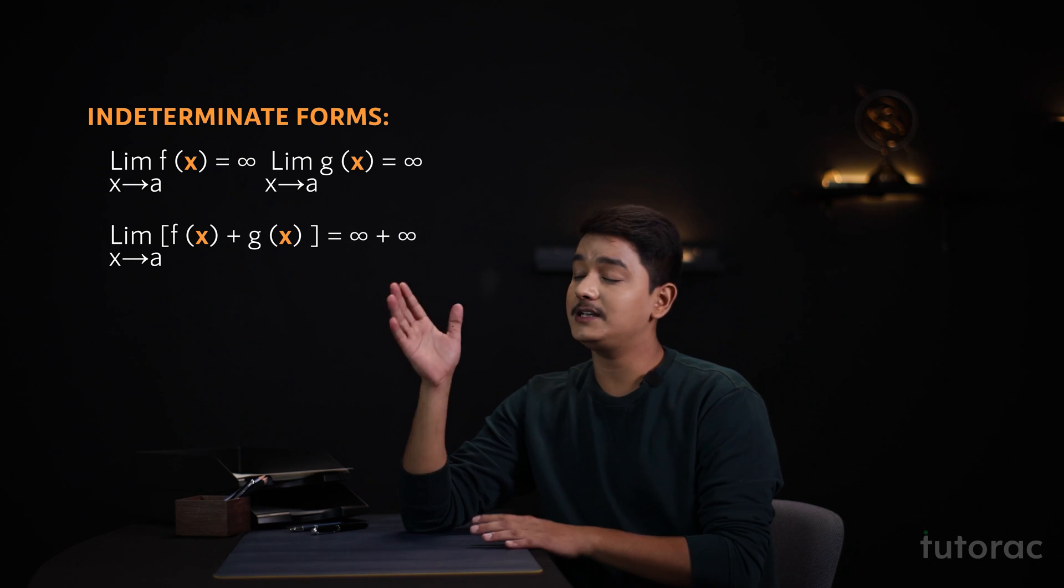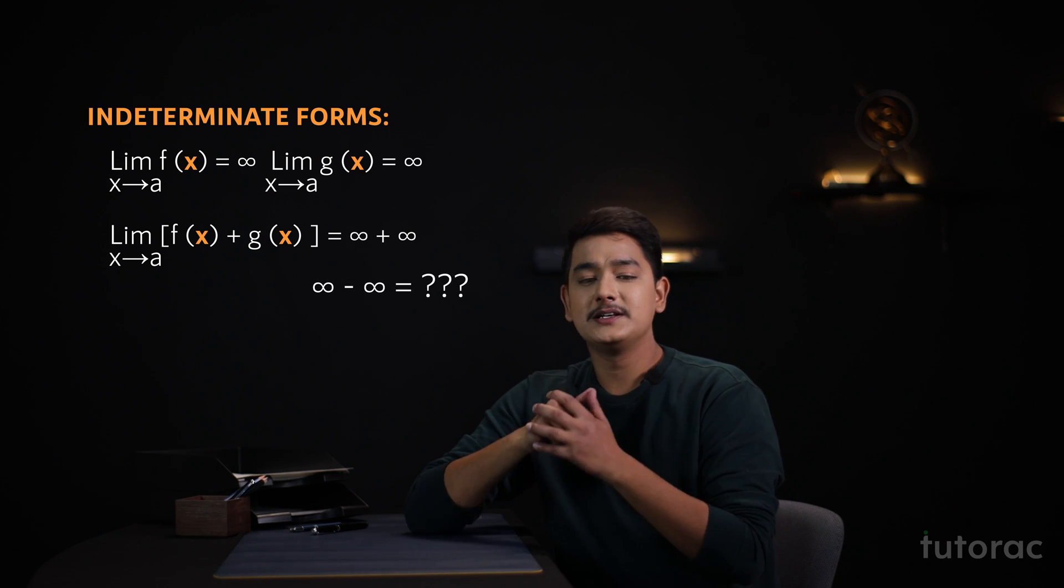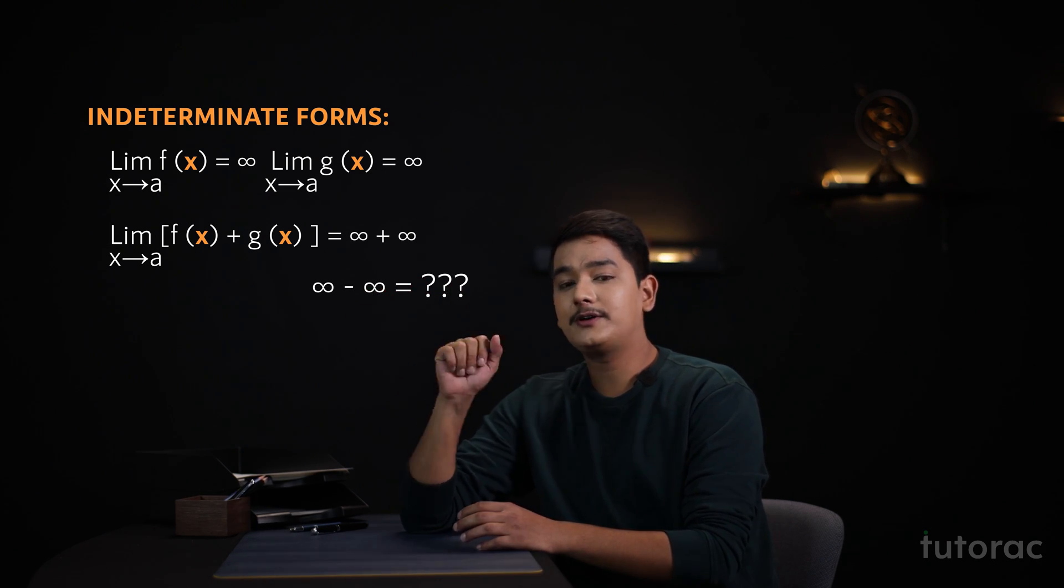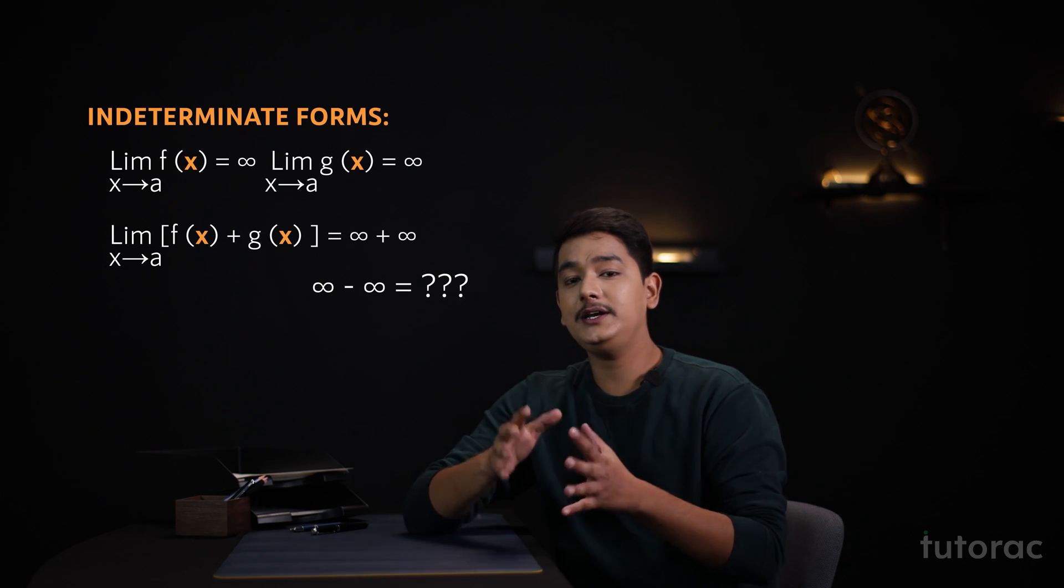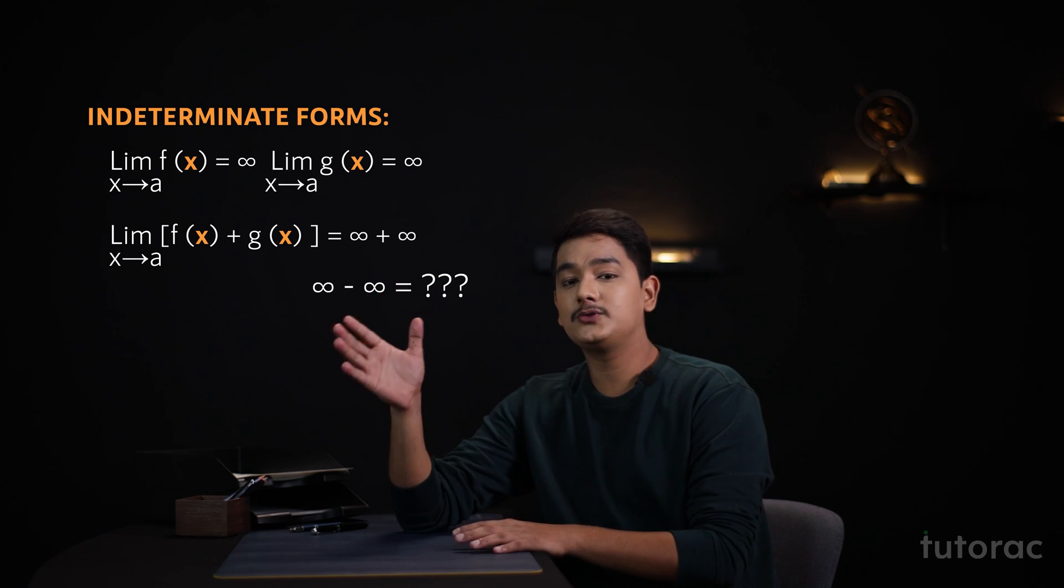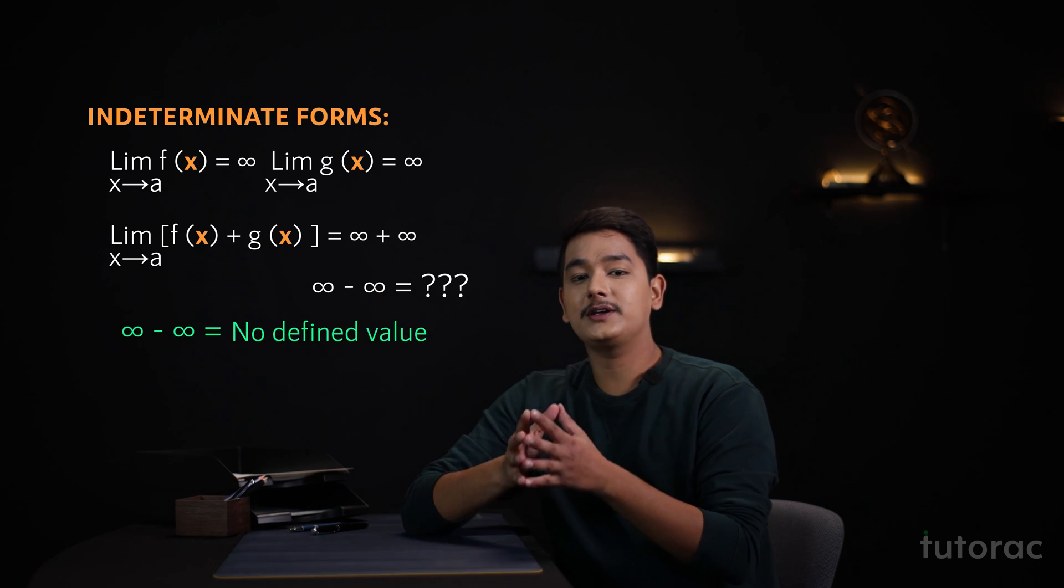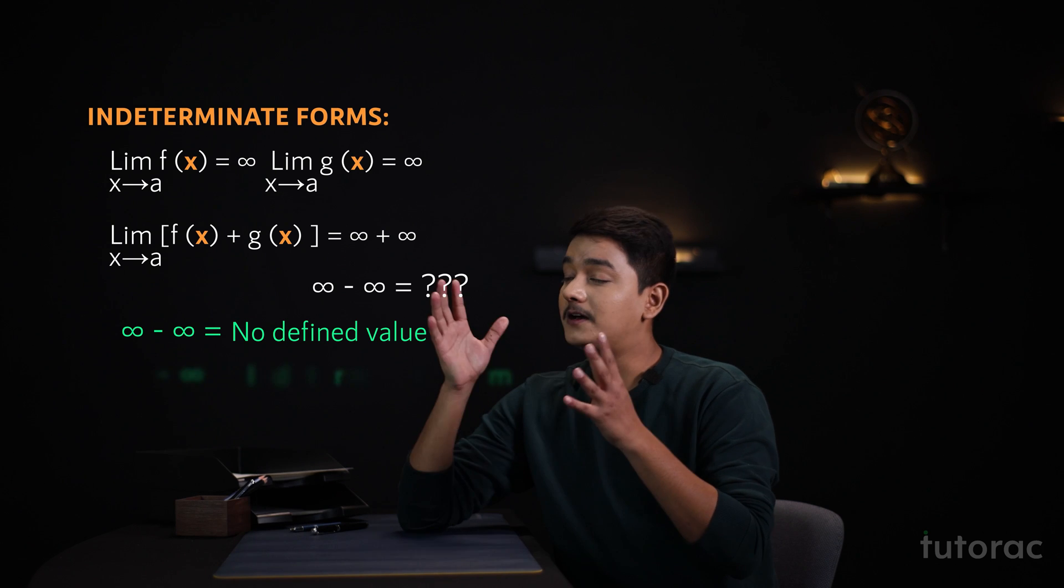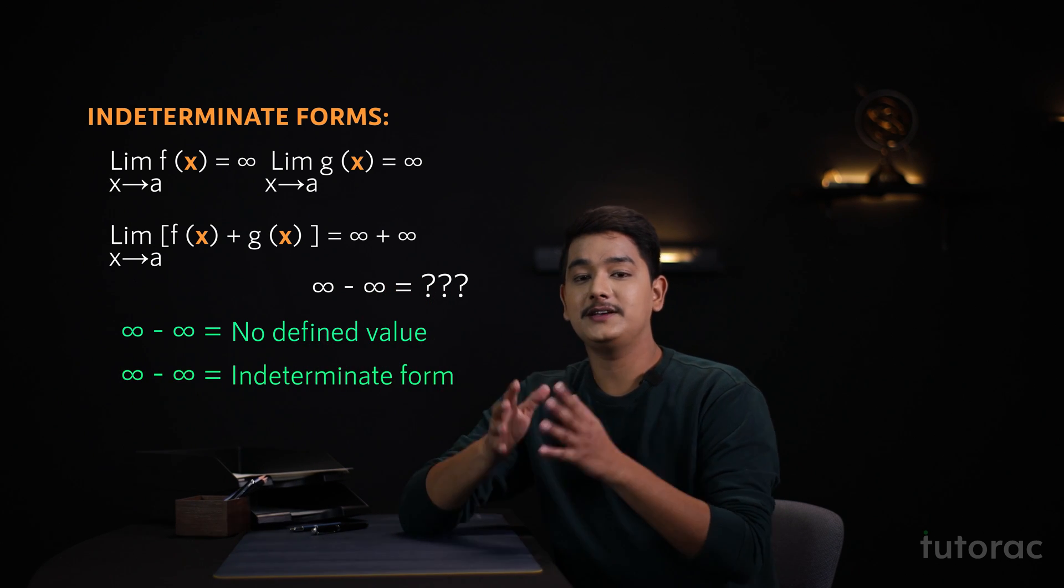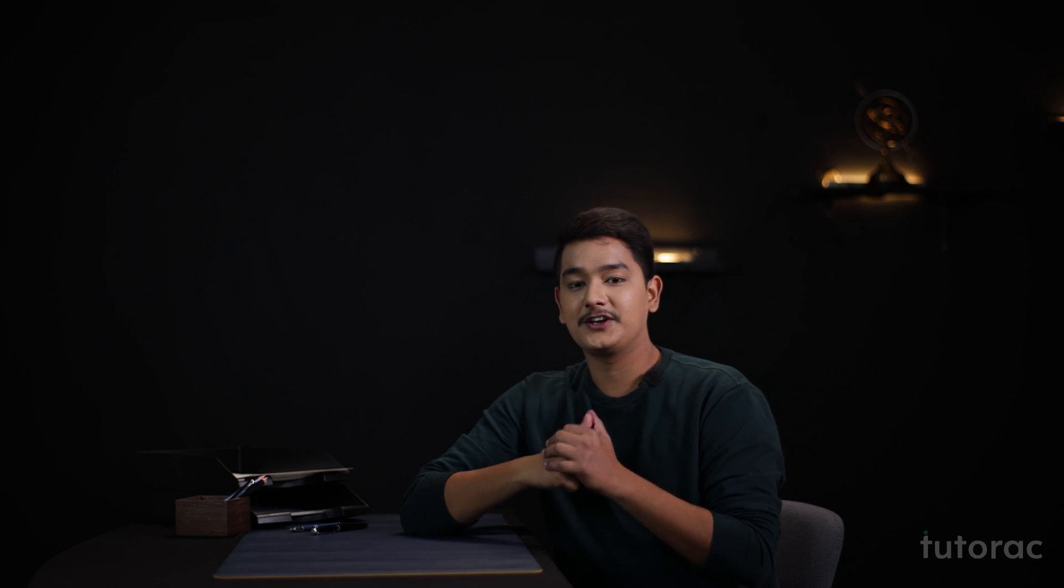what if we get a result as infinity minus infinity? Since both the values are not determined and we do not know any defined values for these two numbers, therefore infinity minus infinity will not give us a determined value and this gives us our first indeterminate form that is infinity minus infinity.